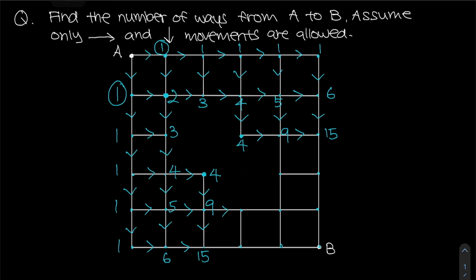You might think you're stuck at this point, but you're not. These two intersection points also only see one arrow pointing to them, which is nine, meaning there are still nine ways to reach each of them. Working out their neighbors: nine plus fifteen equals twenty-four on both sides. Then the two nines connect back to a single central point, which sees two arrows — nine plus nine gives eighteen ways to reach that point.